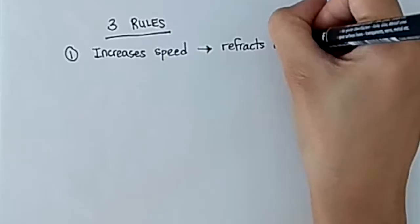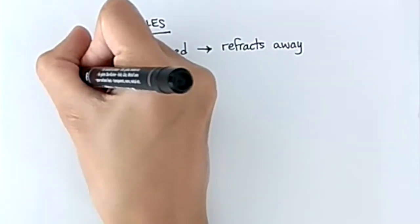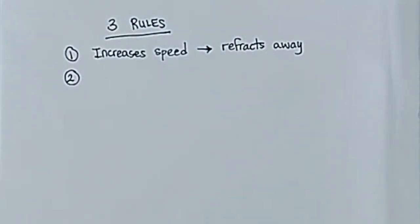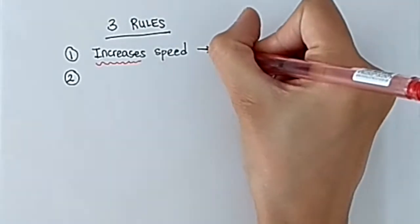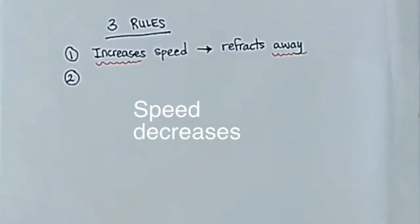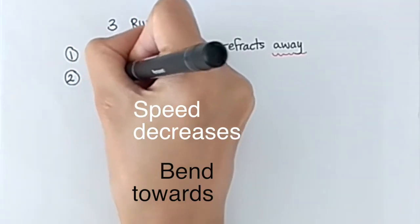I'm going to explain what a normal is in a moment. Now that we have the first rule, we can probably predict what's going to happen if the wave decreases in speed. When it decreases in speed, it will bend towards the normal.